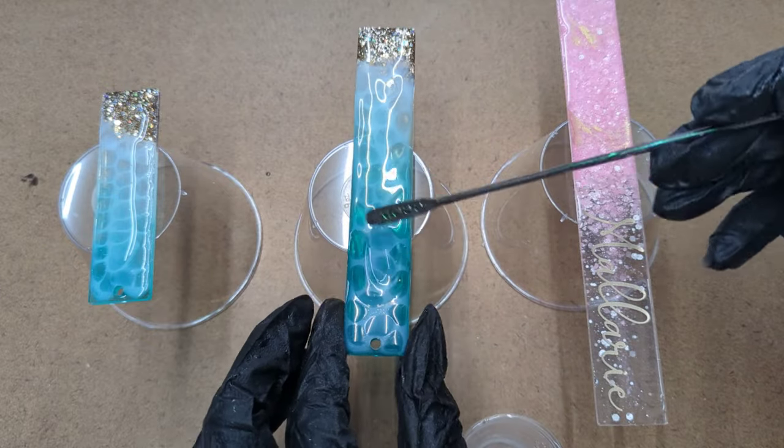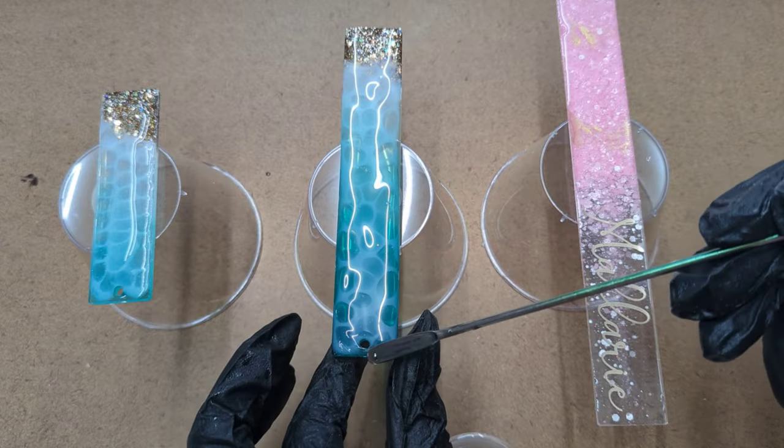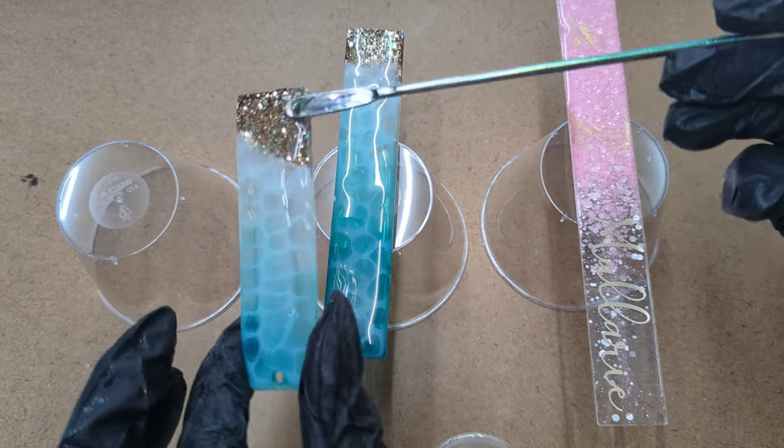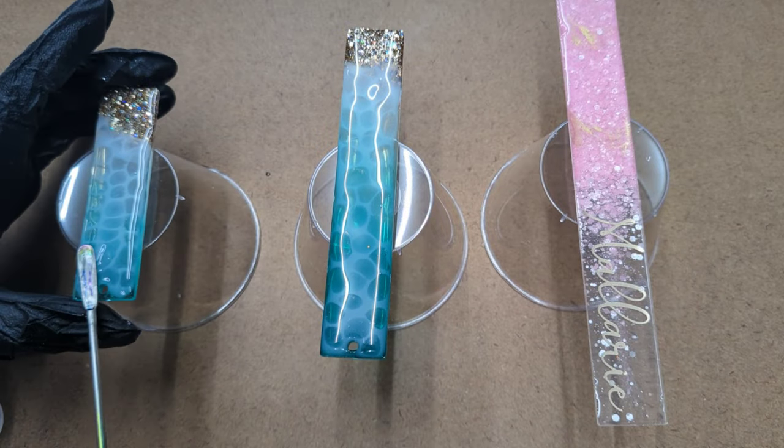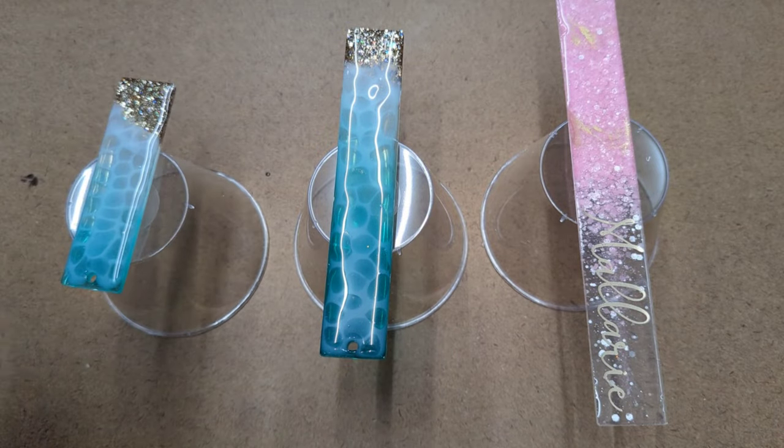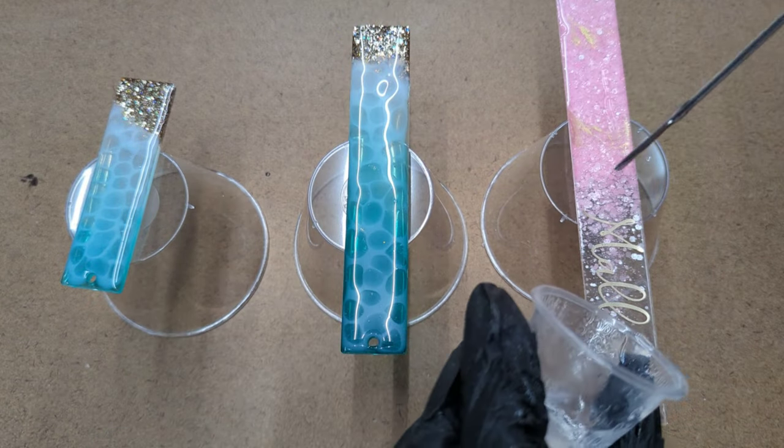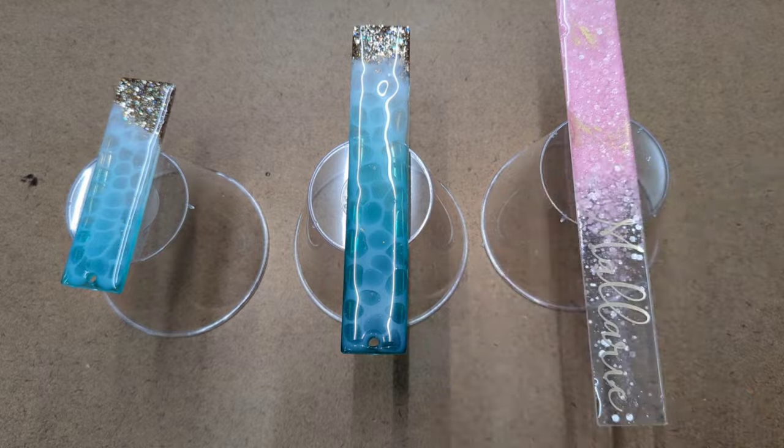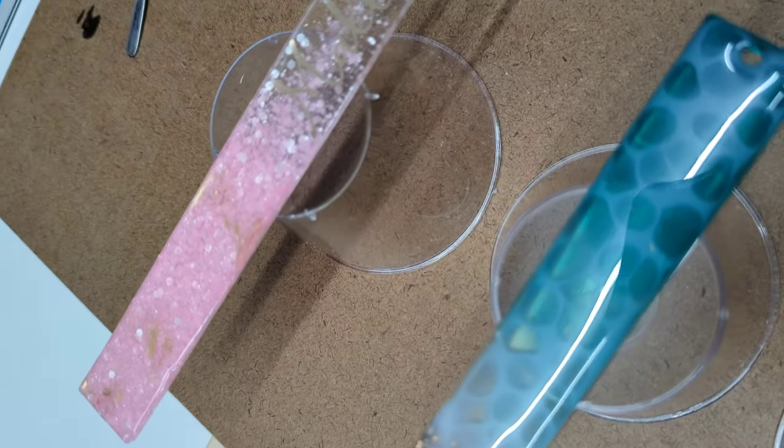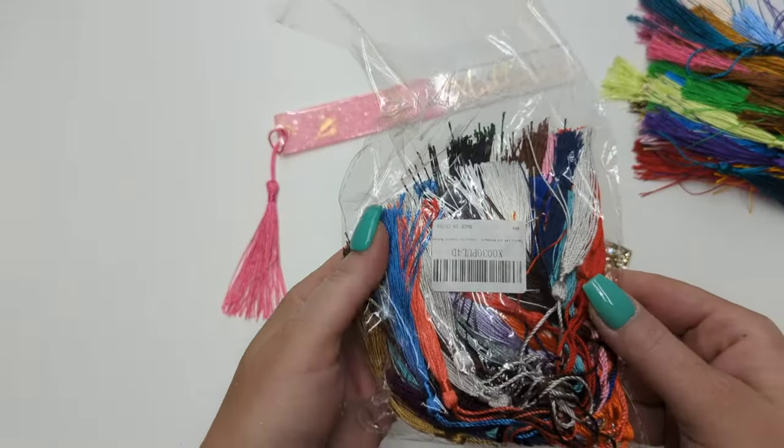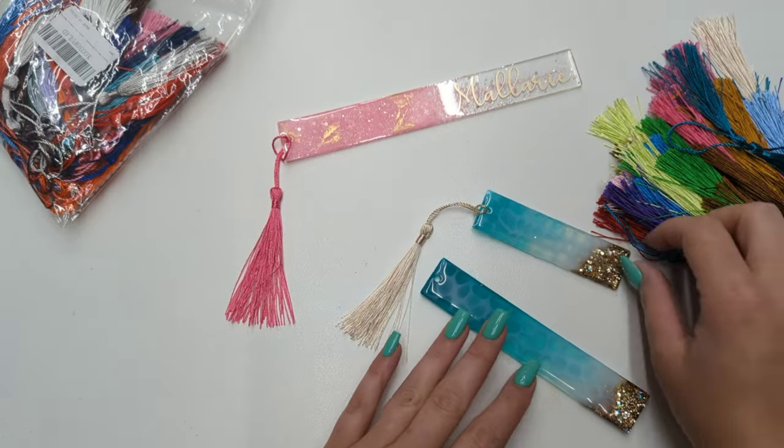This resin is thicker than most resins to begin with, and when you let it sit for that 10 to 15 minutes it's really not going to go anywhere once you put it on whatever it is that you're working on. So I'm not worried about it coming off of the edges. We're going to let this again cure for at least six to eight hours. I let everything sit overnight and then we'll be ready for the finishing touches.